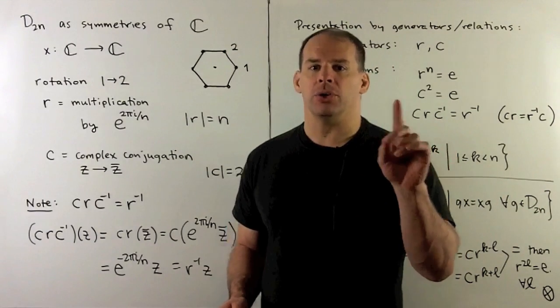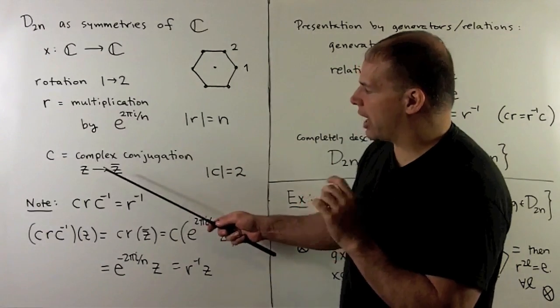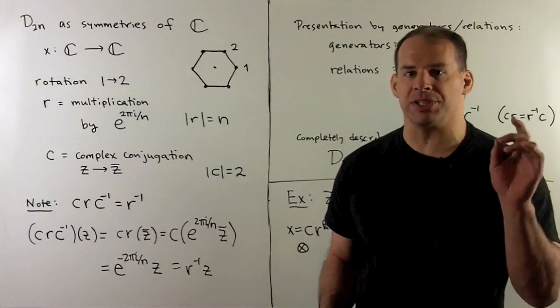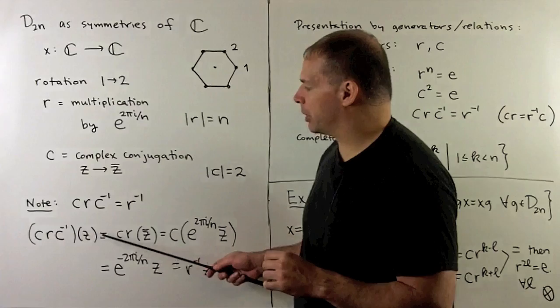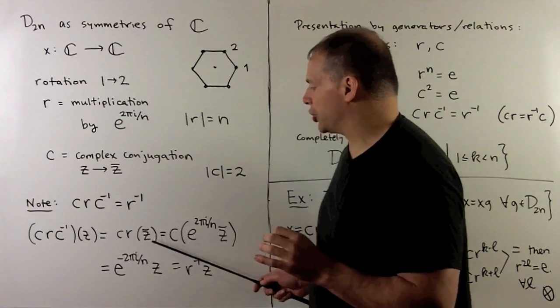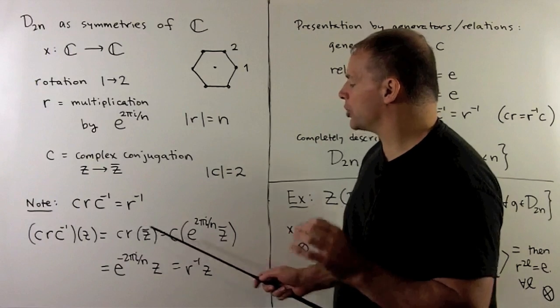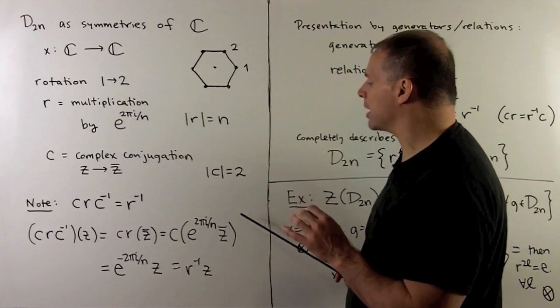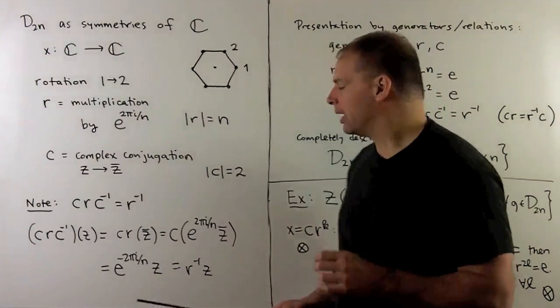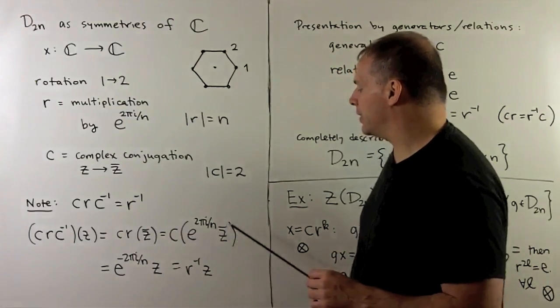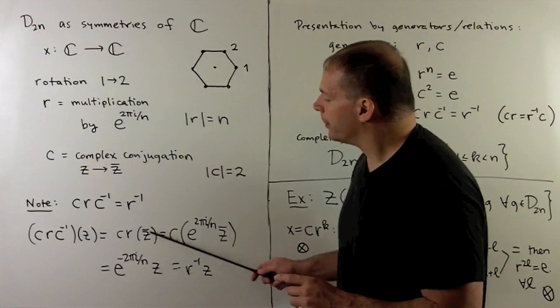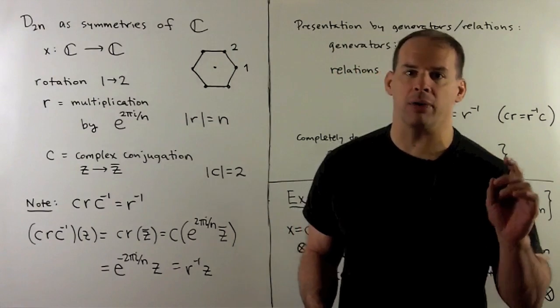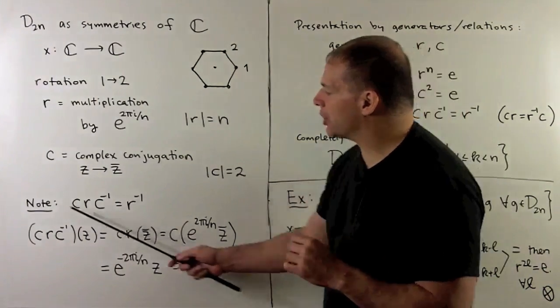Let's verify this using this idea of symmetries of the complex plane. We have crc inverse. Now c is of order 2, so c inverse equals c. I take element of the complex plane, which I'll call z. First thing I do is take its complex conjugate. Then if I apply r, we're just multiplying by e to the 2πi/n. I apply c again, which means take the complex conjugate of this product. If we take the complex conjugate of each term, I get e to the minus 2πi/n, and then the z bar becomes z. Note here, r is multiplication by e to the 2πi/n, so r inverse is e to the minus 2πi/n. So we have r inverse here, and that verifies our identity.